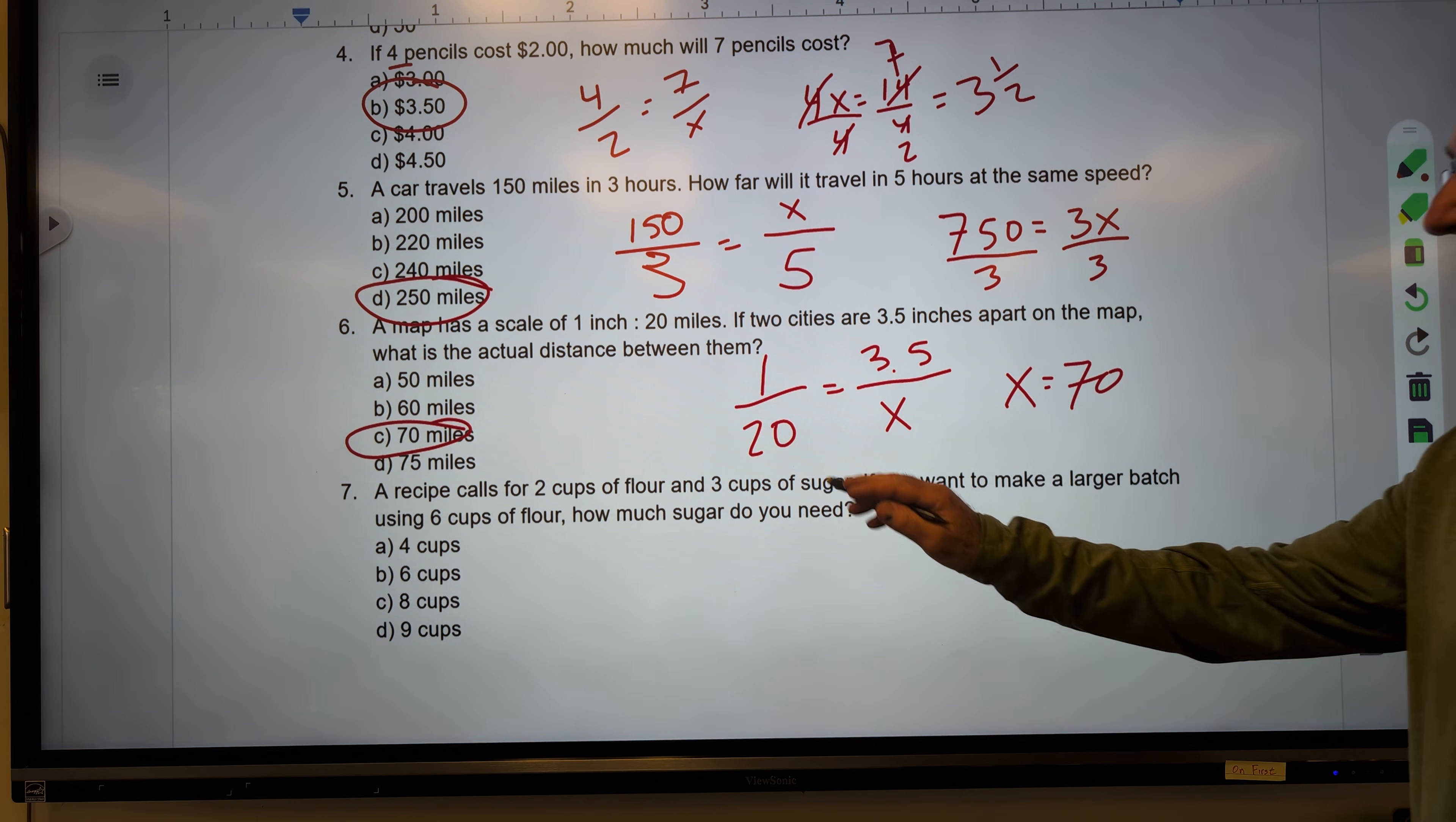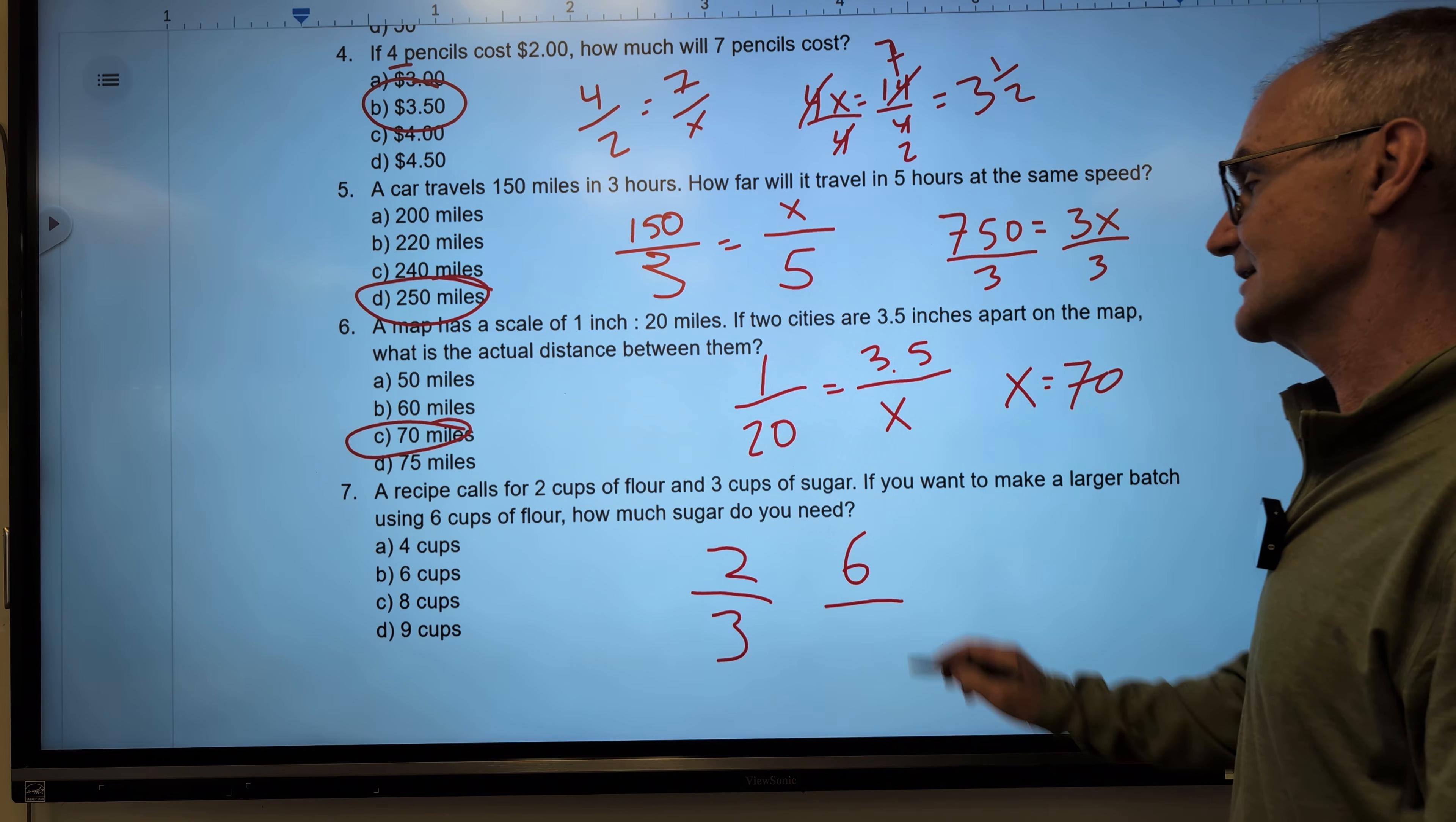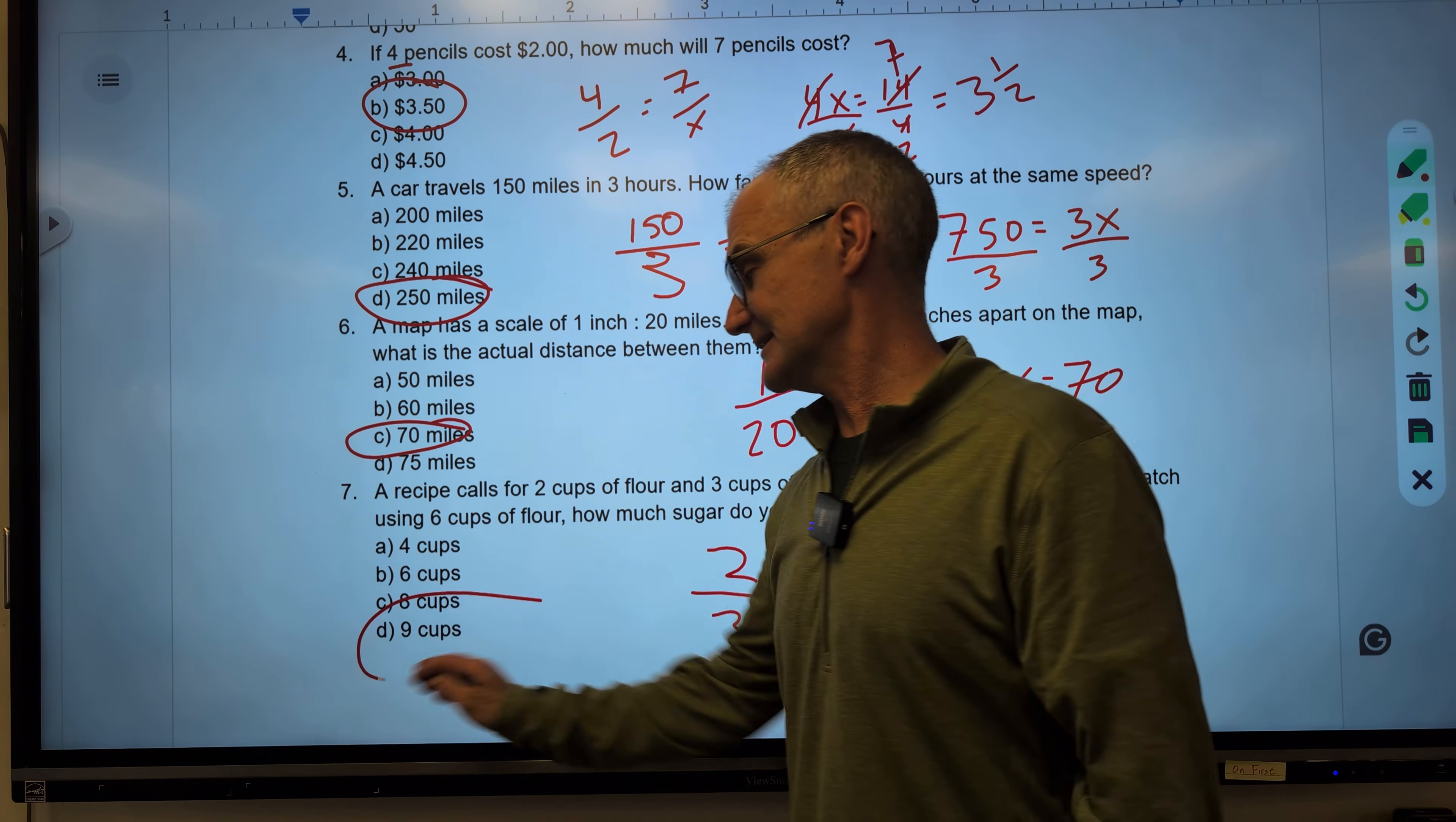Recipe calls for 2 cups of flour and 3 cups of sugar. If you want to make a larger batch using 6 cups of flour, how much sugar do you need? 2 times 3 is 6. 3 times 3 is 9. Correct answer, 9 cups right there.